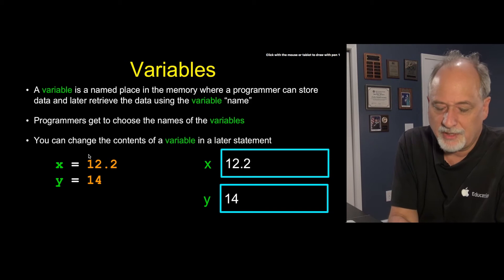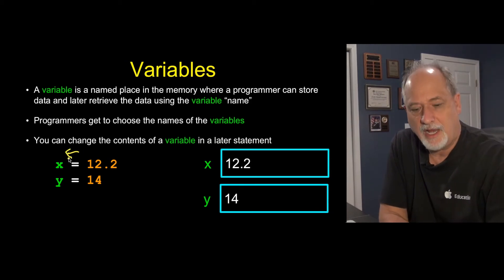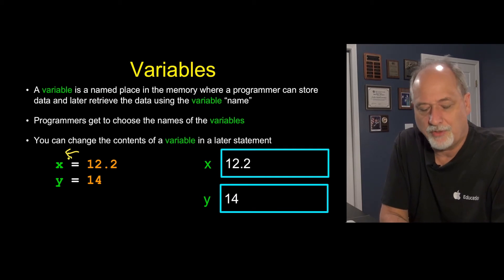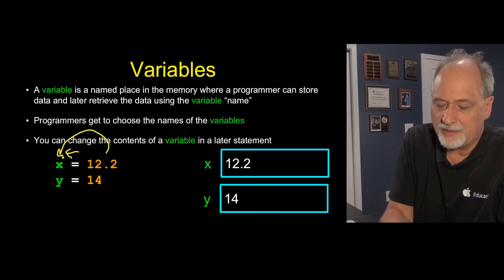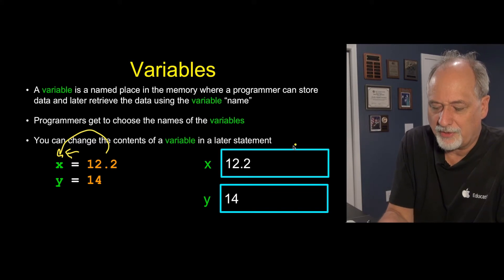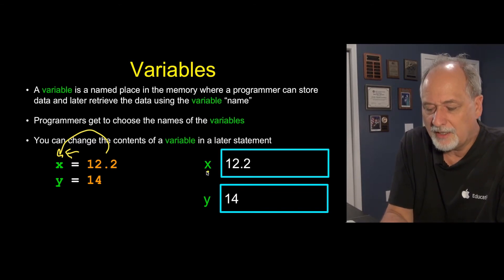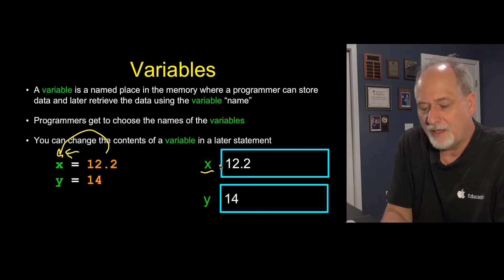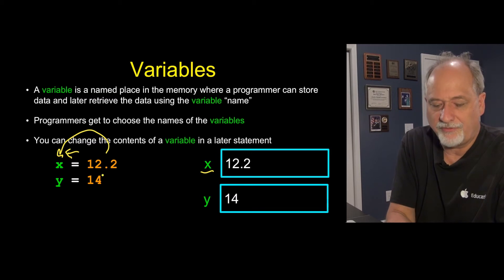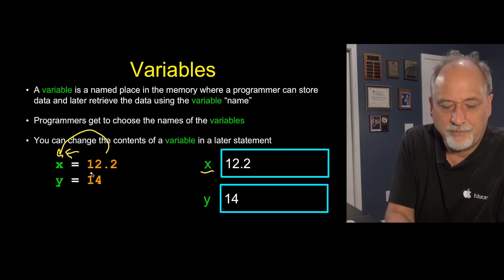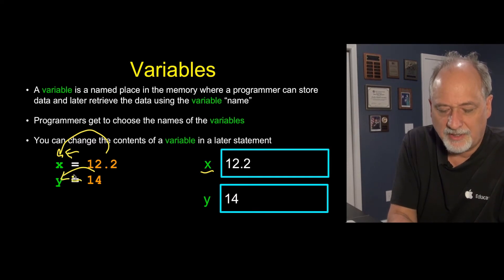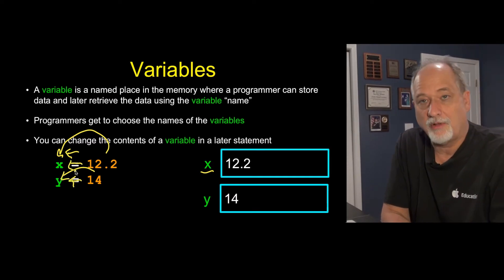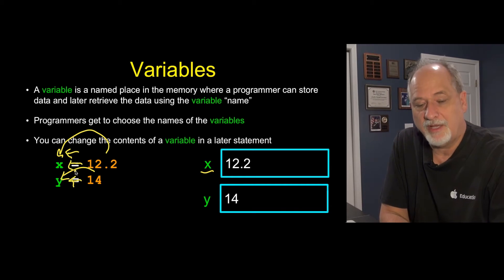It's important to think of the assignment statement as having an arrow to it. This is not saying x for all time is the same as 12.2. What it's saying is: take 12.2, find some memory in your computer, give it the label x — we get to choose x, that's the variable part — and then stick 12.2 in it. The same is true for 14: go find another spot, name it y, and put 14 in there. Think of this as an arrow every time you see the equals sign in an assignment statement.